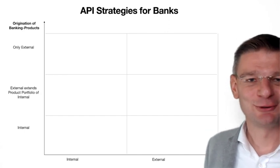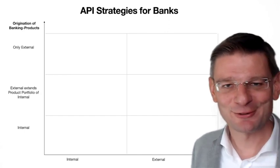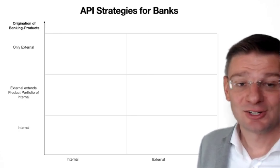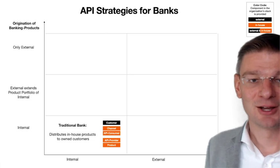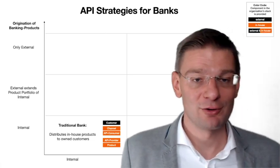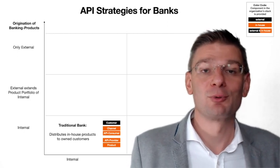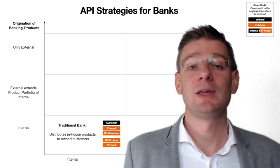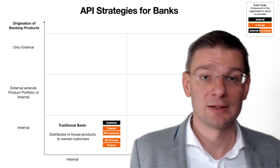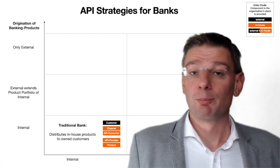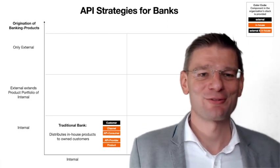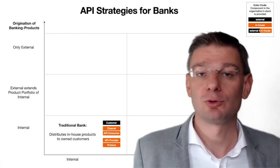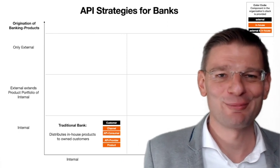In the end, you will get a 3x2 matrix with different options. Let's start in the bottom left. In the bottom left, we have the traditional configuration, where there is the customer, which is outside the bank, and the channel and the banking product are both provided by the bank — in-house. The bank has full control of them, but they're separated by an API, which could be an internal API in that case, because there are no external parties involved.